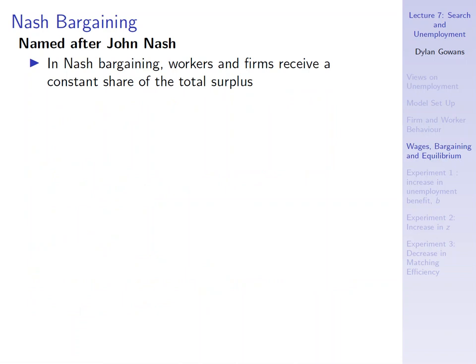Let me introduce the concept of Nash bargaining. Nash bargaining is named after John Nash — if you've seen A Beautiful Mind, that's about John Nash. He was an economist and mathematician famous for results in game theory, and one of these results is Nash bargaining. In Nash bargaining, workers and firms receive some constant share of total surplus. He shows where this share comes from, but in our case we'll take it as given.